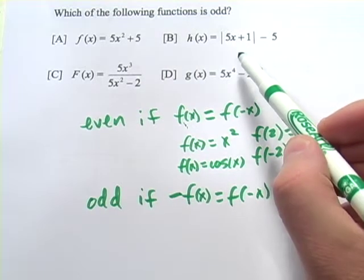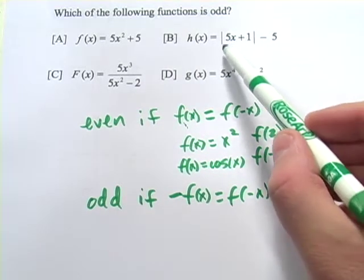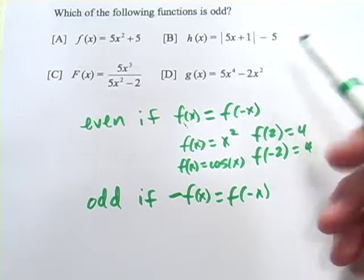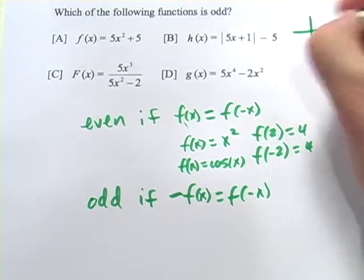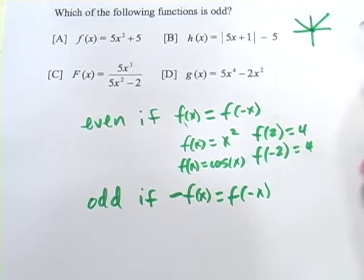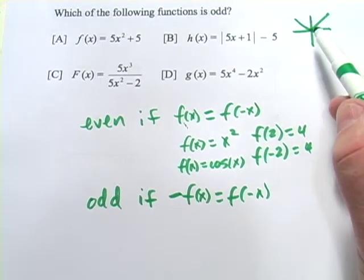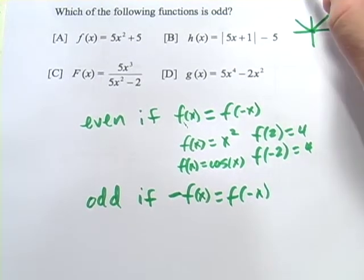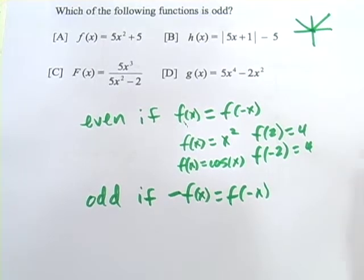This next one, not sure what to think about it. The absolute value of 5x plus 1 and then minus 5. Well, let's look at the mother function for absolute value. Just y equals the absolute value of x looks like that. And that is very similar in its symmetry to a parabola.